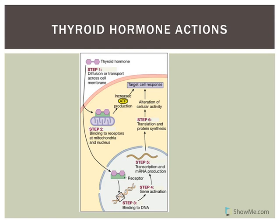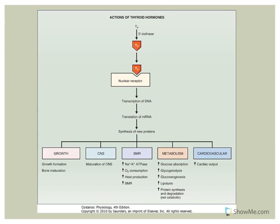Thyroid hormones have multiple targets — they target virtually every cell in your body. One key thing to note is that T4 must be converted to T3 by a deiodinase enzyme. T4 is transported across the plasma membrane, converted to T3, and T3 then binds to a receptor in the nucleus, affecting transcription and ultimately producing new proteins.